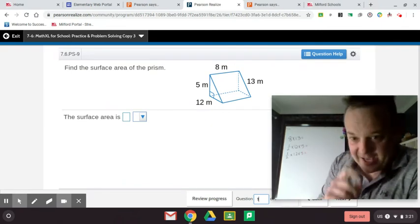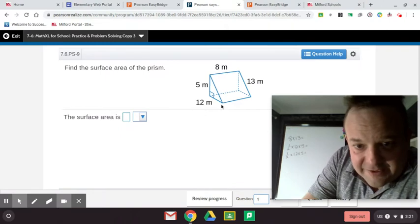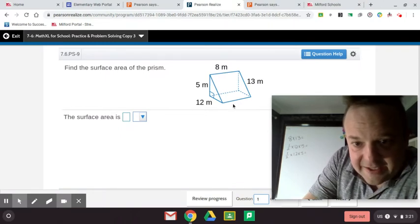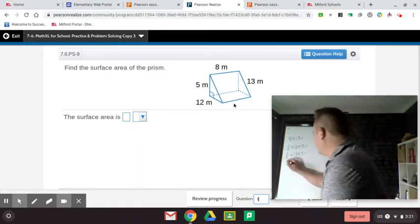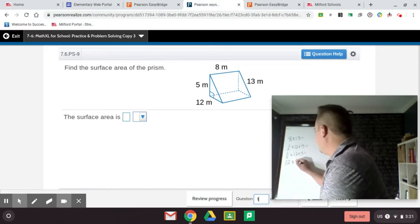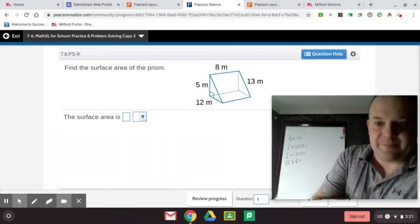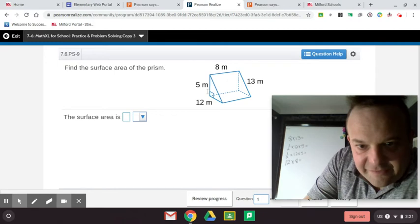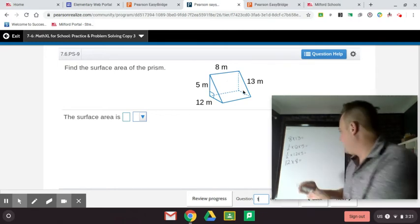And then we have this bottom face. This is 12 by 8 guys, 12 by 8. So 12 times 8. And then this back face, this back face is 5 by 8, 5 by 8.